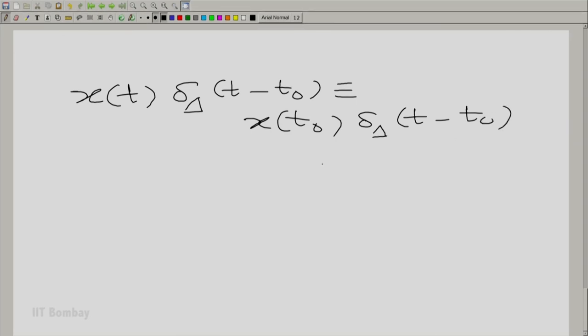Now, we could understand it slightly differently. You know, we have also written an intermediate step there. Let us write it again. We wrote down, x of t delta delta t minus t0 is equivalent to x of t0 delta delta t minus t0. And then we said that when we integrate x t delta delta t minus t0 dt, we get x of t0.